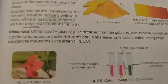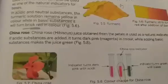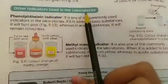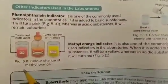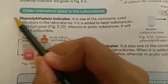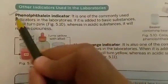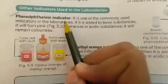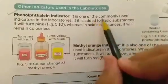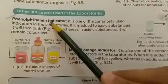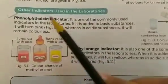Now let's talk about the indicators used in laboratories. The very first is phenolphthalein indicator. It is a very commonly used indicator in the laboratory. Phenolphthalein indicator has no color of its own — it is colorless.